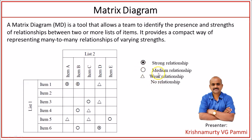Just a circle is used to denote a medium relationship — so item 3 and item C are mediumly related, and there is a medium relationship between item 4 and item B. A triangle is used to denote a weak relationship — item 5 and item A are weakly related, item 5 and item C are also weakly related, and item 3 and item D are weakly related.